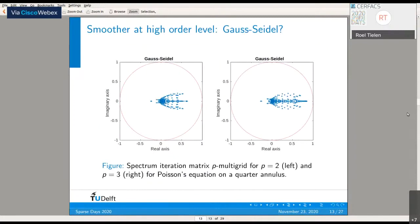The question remains: which smoother to use at the high-order level? On level P equals 1, we can use Gauss-Seidel, but using Gauss-Seidel on the high-order level doesn't lead to an efficient multigrid method. To illustrate that, I plotted the spectrum of the iteration matrix for P-multigrid using Gauss-Seidel as high-order smoother for P equals 2 and P equals 3. The spectrum becomes closer and closer to the unit circle, which implies slower convergence.